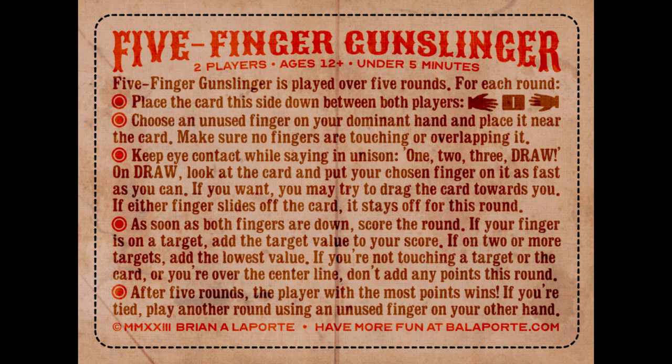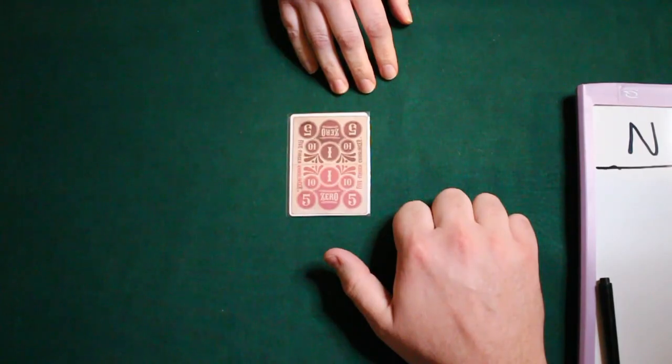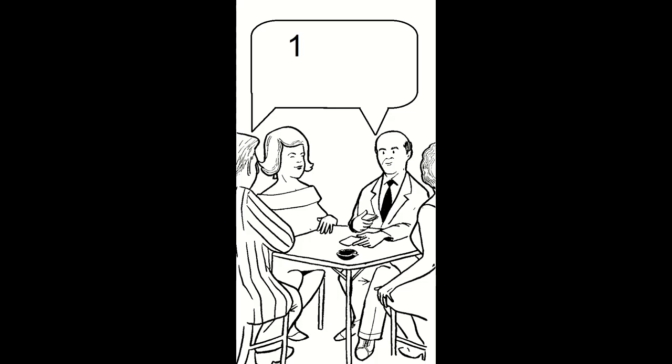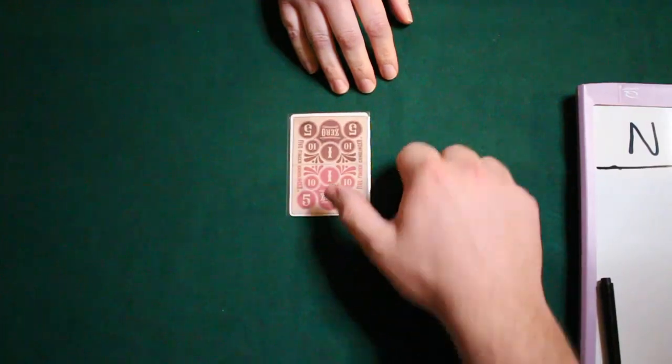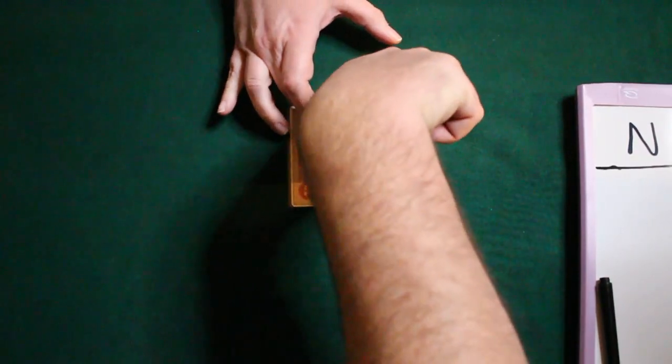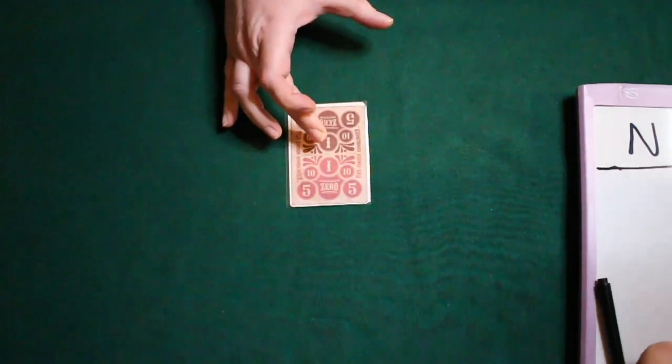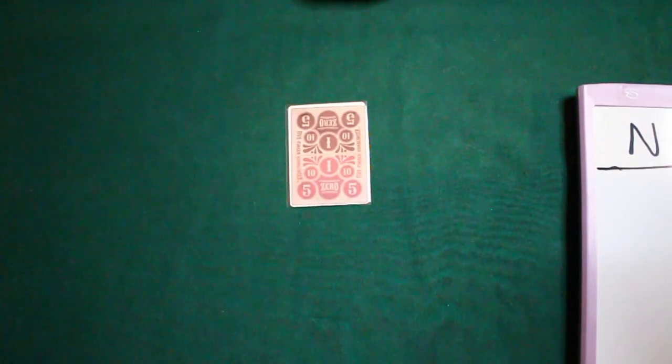And this is more of a dexterity game where you use one of your five fingers in five rounds to score as many points as possible. You'll lock eyes with your opponent, do a countdown to one, two, three, and then you'll yell out draw. And on draw, both players are going to look at the card and place a finger down. Now, if they get their finger in the entirety of that circle, they get that point. So it can be argued here that North scored a point, but South didn't.